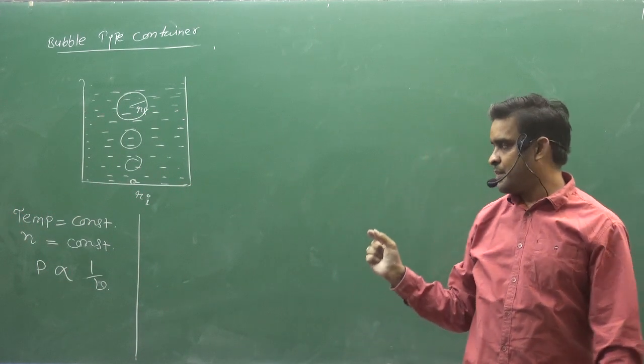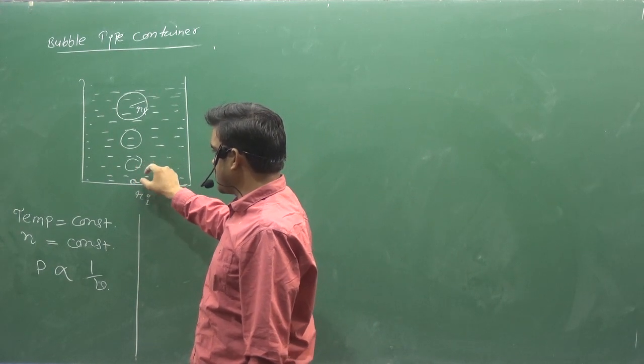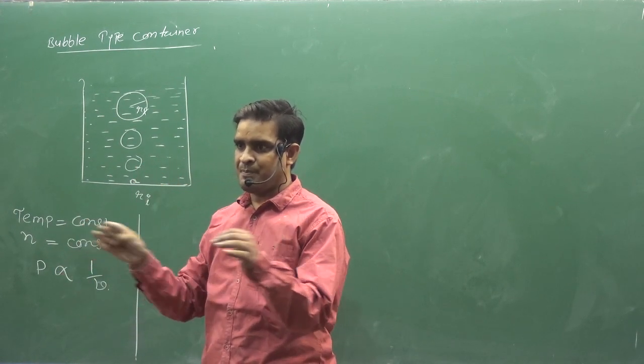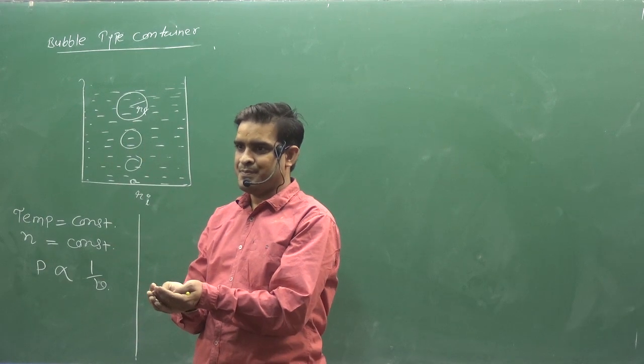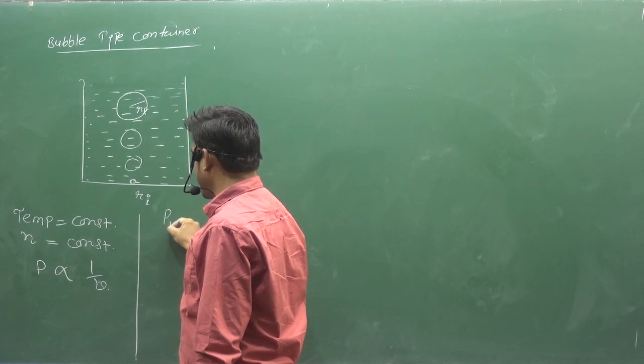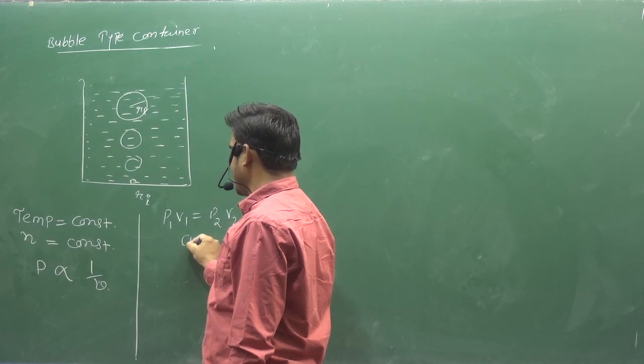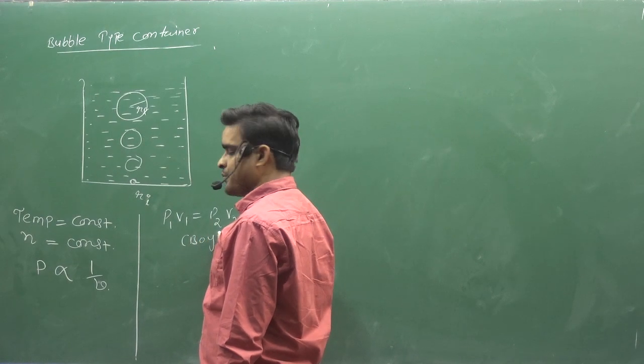The point we have to understand next is this: the pressure is under the bubble. This will be the external pressure, because the boundary pressure will be equal to the boundary. Do you understand? So here we have P1 V1 equal to P2 V2. Who was given? Boyle's.